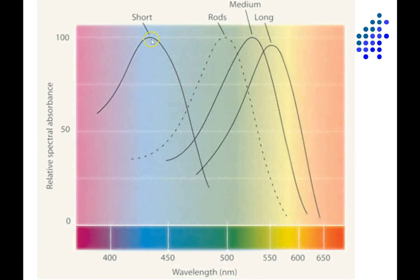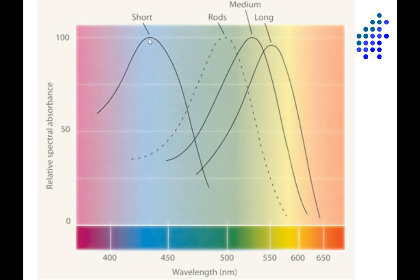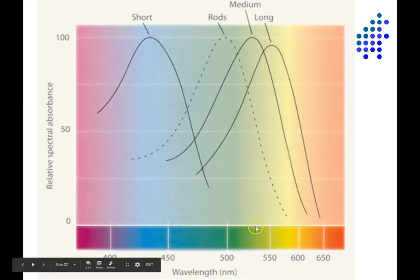You can see that short wavelength cones are maximally sensitive to shorter wavelengths of light. The peak sensitivity is right around 475 nanometers. And they become less and less responsive to longer wavelengths of light until you get out to about 480 nanometers, at which point they stop responding. The medium wavelength cones are maximally responsive to light at about 530 nanometers or so.